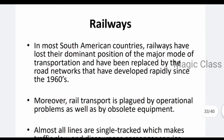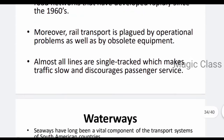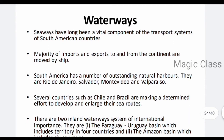Railways have lost their dominant position as the major mode of transportation and have been replaced by road networks. Main operational issues include single-track lines where traffic flow is slow — only one train can pass at a time. Despite these challenges, railway development in South America remains an important and vital component of the transport system.